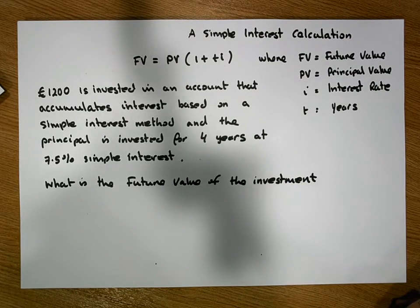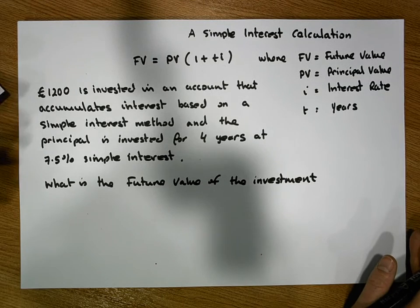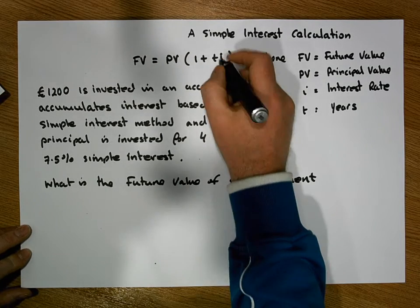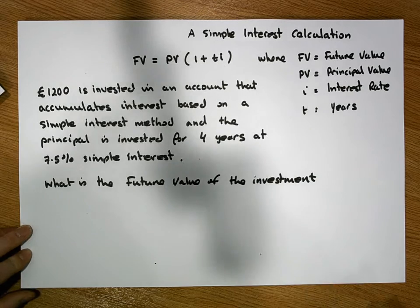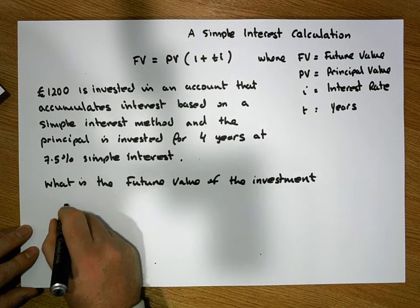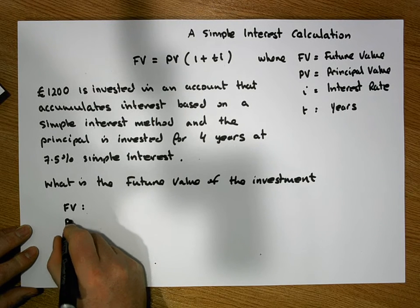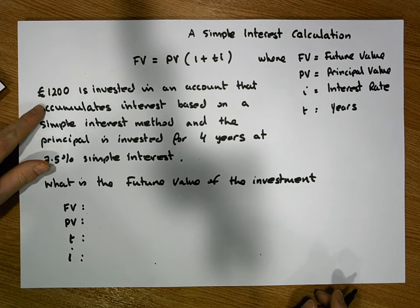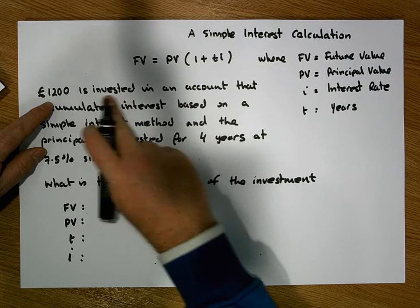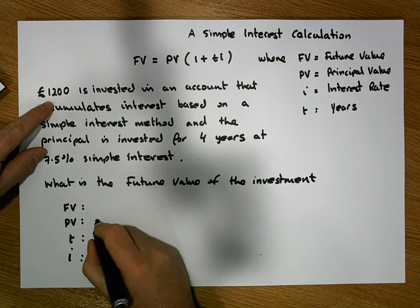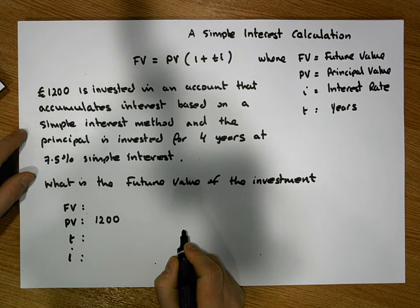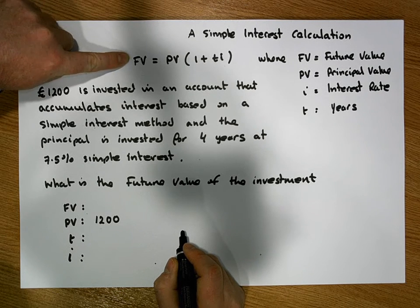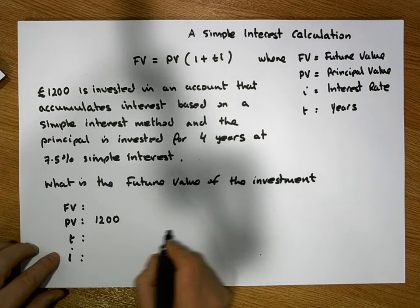The first thing we should do is identify from our scenario all of the parameters that we have. Let's write down all of our parameters: there's FV, there's PV, there's T, and there's I. From our scenario, 1,200 euros is invested, so that is our principal value — PV is 1,200. The principal is invested for four years, so T is equal to four.